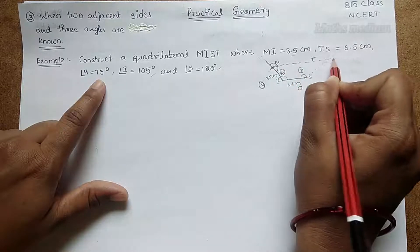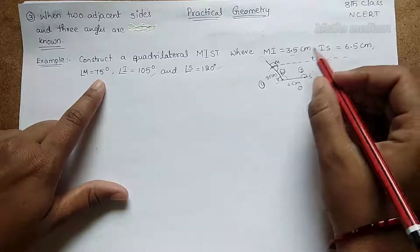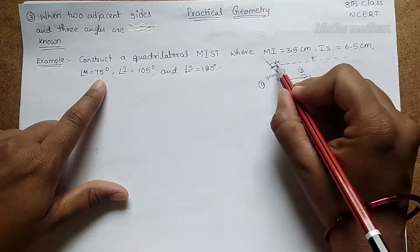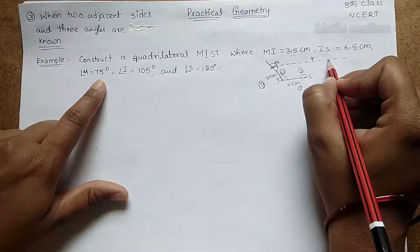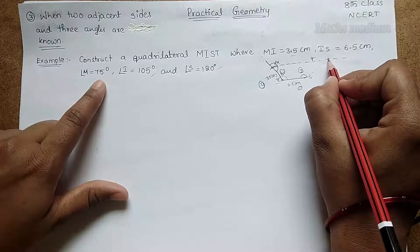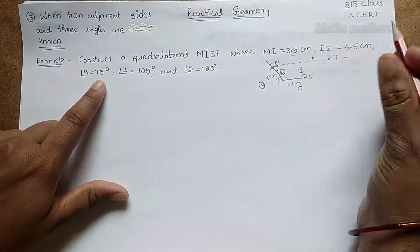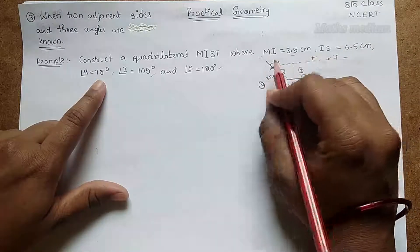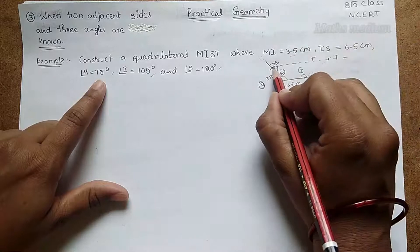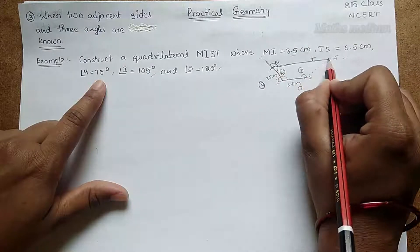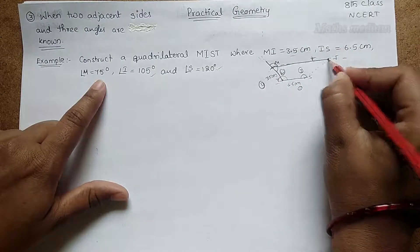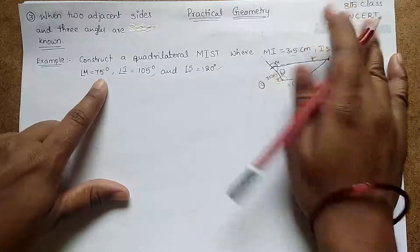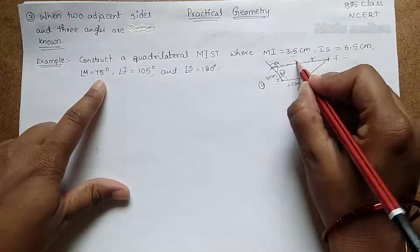If these lines meet at a point, that is point T. No lengths are given for that side, so we just draw a line meeting at a point. This is Step 5. This shape is a trapezium.